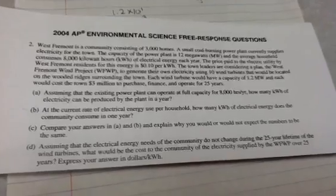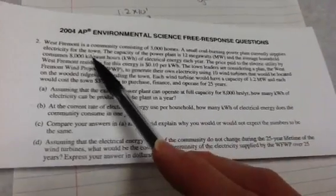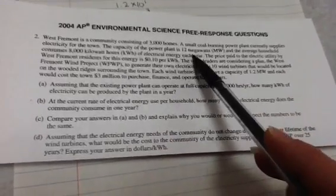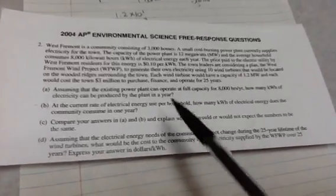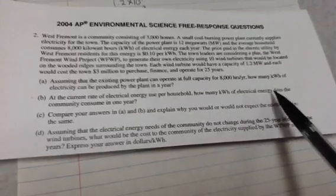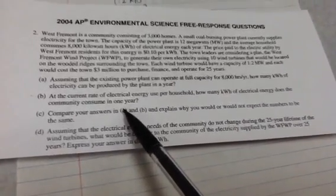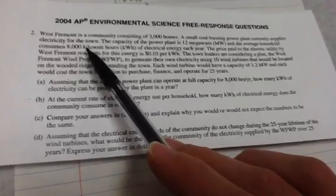On B, it says, at the current rate of electrical energy used per household, which was up here, normal house uses 8,000 kilowatt hours each year. So each is per, so that's a division bar there, if I needed it to be. Anyway, at the current rate of electrical energy used per household, how many kilowatt hours of electrical energy does the community consume in a year? Well, I have 3,000 houses in this community. Does this have a buddy? No. Each one uses that. So this is really straightforward.